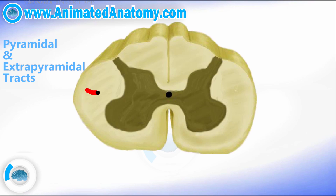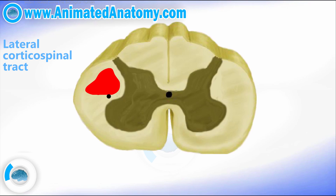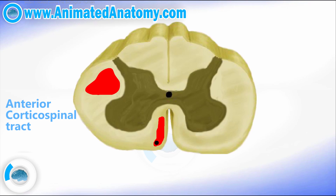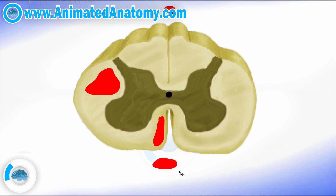The pyramidal tracts include the lateral corticospinal tract and the anterior corticospinal tract. For orientation purposes, this is the anterior side, this is the posterior side, and this is the lateral side. That is why one is called the lateral and the other the anterior corticospinal tract.